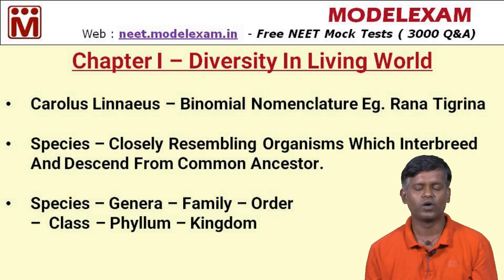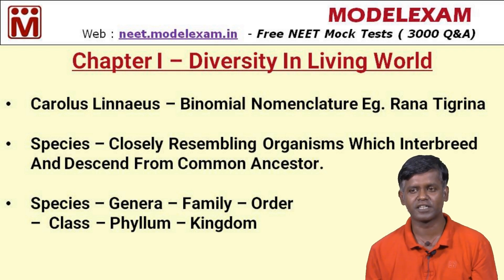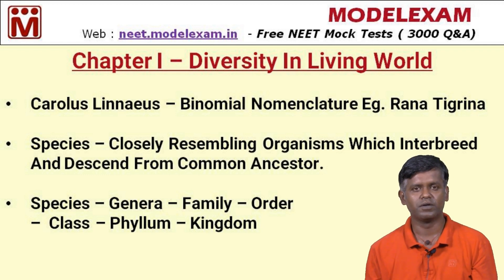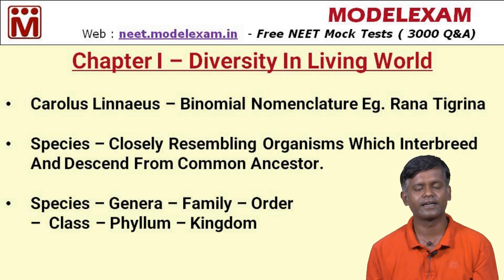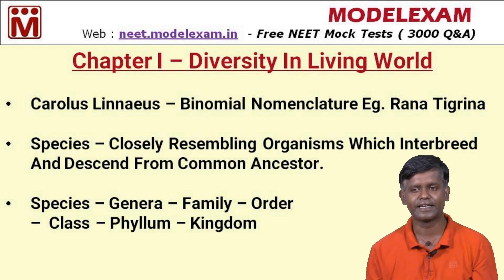Biological diversity has been categorized by several scientists, but the first scientist who classified using binomial nomenclature was Carolus Linnaeus. He classified organisms at the genus level and species level. For example, Rana tigrina is the scientific name for a frog — 'Rana' means the genus and 'tigrina' means the species. Carolus Linnaeus is also considered the father of taxonomy.